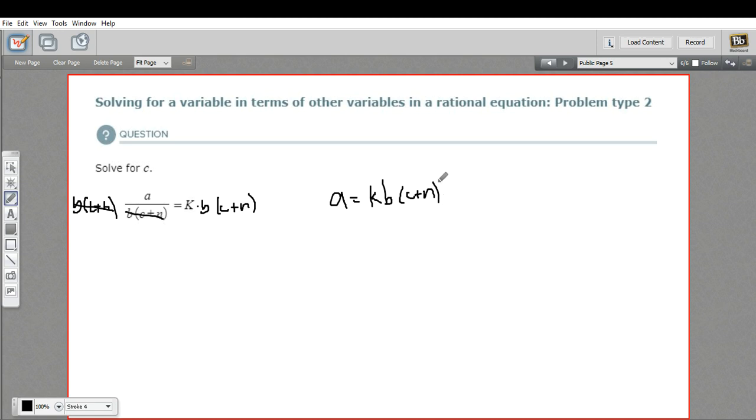The next step is we want to get this set of parentheses alone because it has our variable in it. So to do that, I need to divide by kb because kb is multiplied by this set of parentheses. So divide by kb here. Same thing on the other side. And now we're going to get a over kb equals, and over here the kb's cancel, so we've just got c plus n, and I can drop the parentheses.